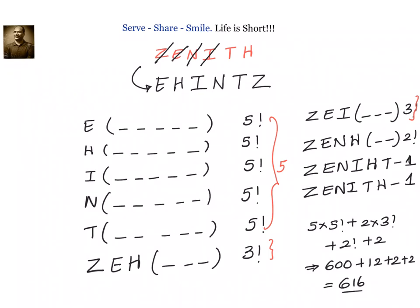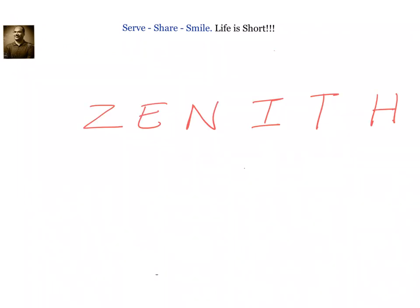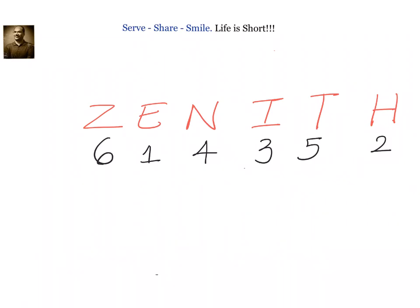In the shortcut method, first we will rank the alphabets according to their dictionary order. We know E comes first — rank 1. Then H is rank 2. Then I is rank 3. Then N is rank 4. Then T is rank 5 and Z is rank 6. Once we rank them, we have to see how many letters to the left of the current letter are less than it.